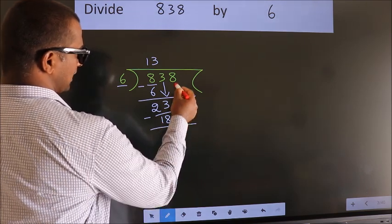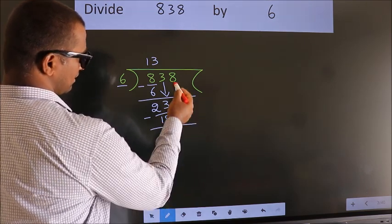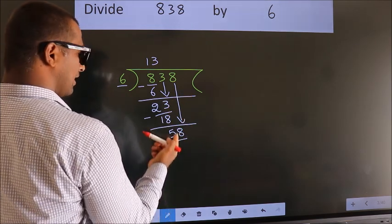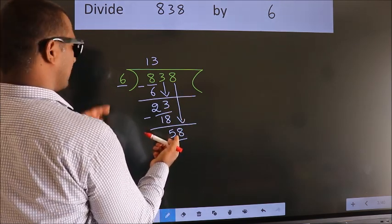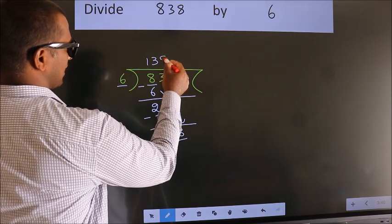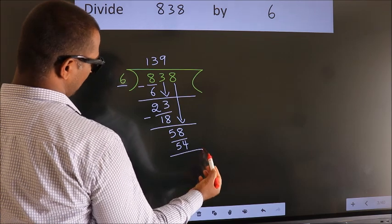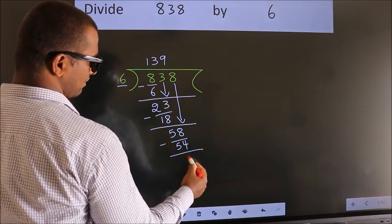After this, bring down the beside number. So, 8 down. So, 58. A number close to 58 in 6 table is 6, 9, 54. Now, we subtract. We get 4.